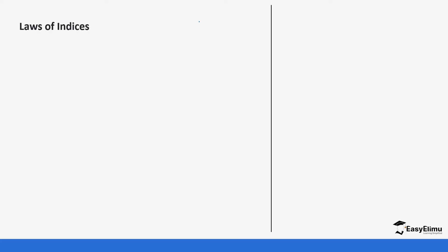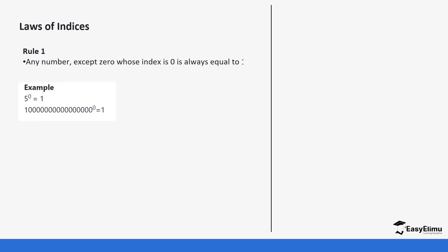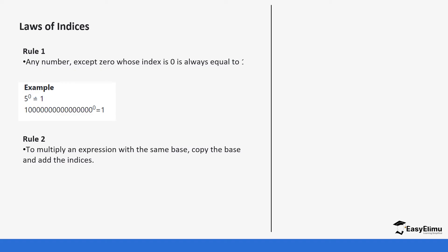Let's look at some of the laws of indices. The first rule is: any number except 0, whose index is 0, is always equal to 1. So if you raise a number to the power of 0, you always get 1. The next rule talks about the multiplication of indices with the same base. Remember, the key thing is the same base.